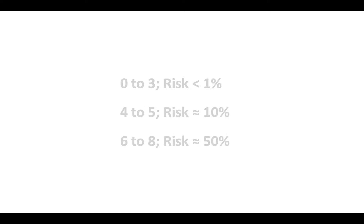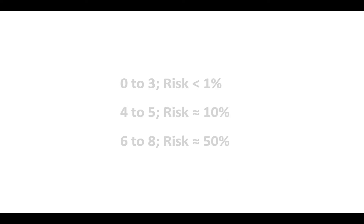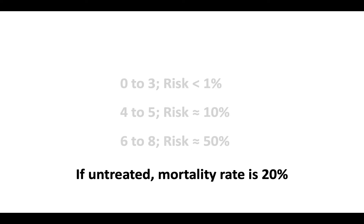Therapeutic anticoagulation is required because, if positive, up to 50% of untreated patients will develop thrombosis. Additionally, untreated HIT has a mortality rate as high as 20%. With early intervention, mortality rates fall below 2%.